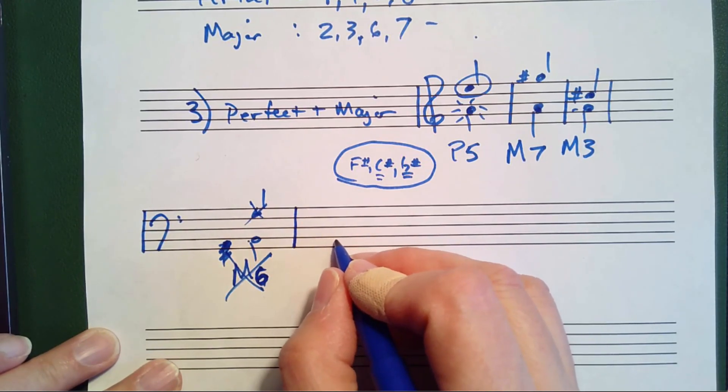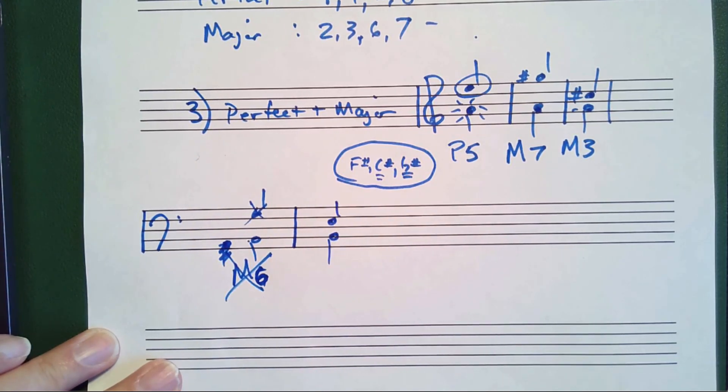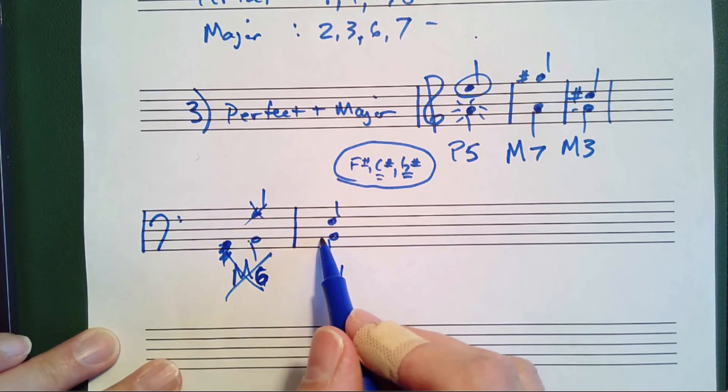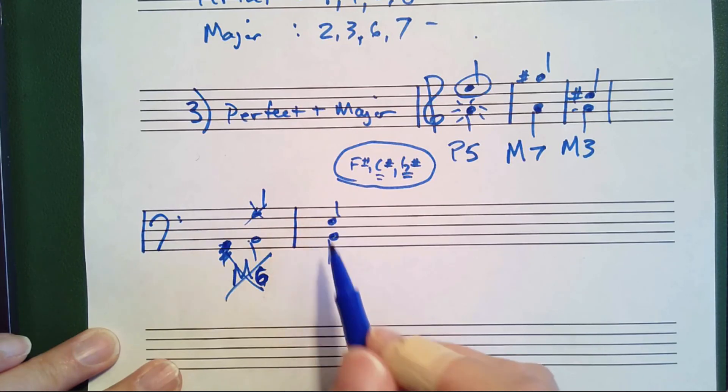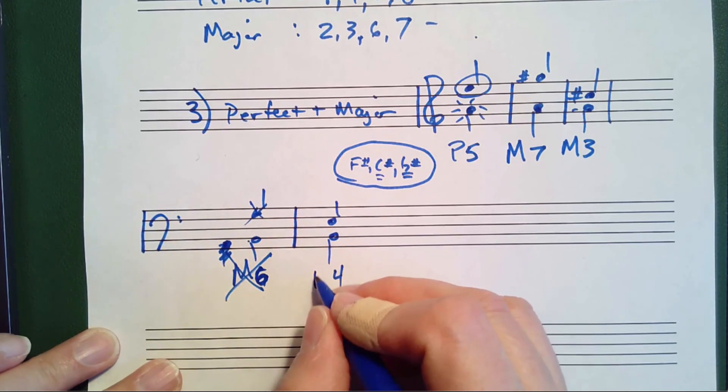So if we had B and we had the note E, B, C, D, E is a fourth. The key signature of B is F sharp, C sharp, G sharp, D sharp, A sharp. So E natural is the fourth note of the B scale. This is a perfect fourth.